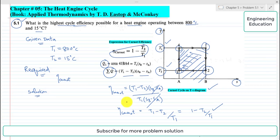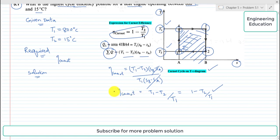Now putting the values of temperatures, T1 which is 800 degree C and 15 degree C, we will convert these values into Kelvin. So it will become 1073 Kelvin and it will become 288 Kelvin.